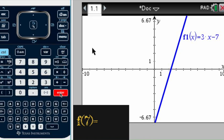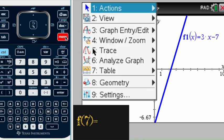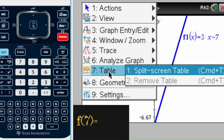But as we said, we are going to use the table. To generate the table, we go to menu, table, which is number 7, and split screen, which is number 1.